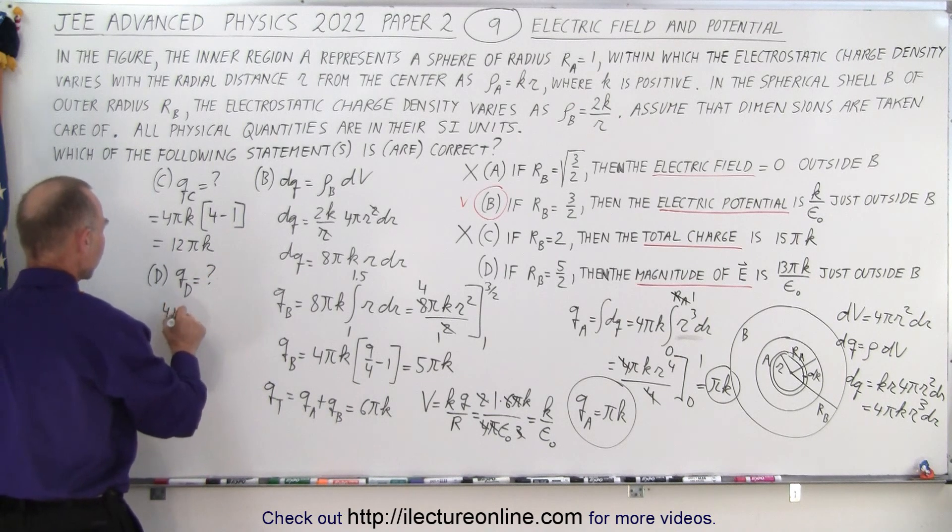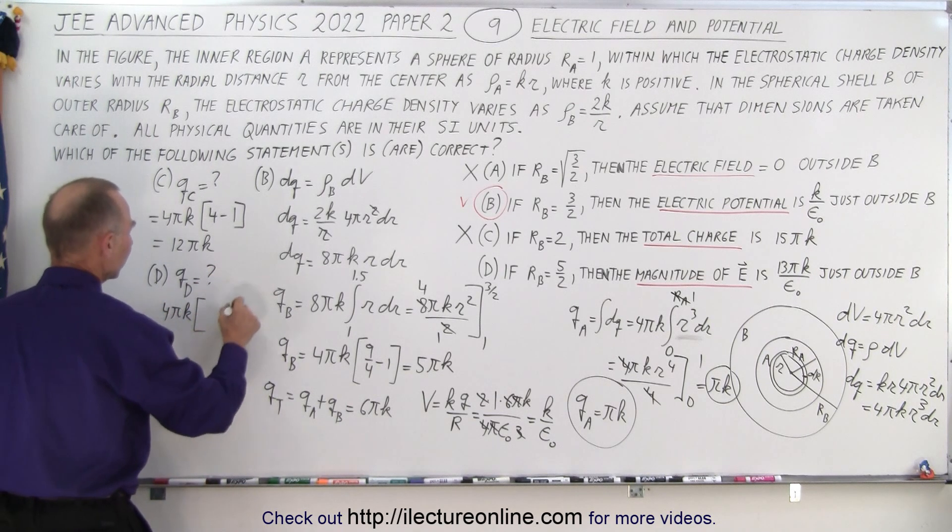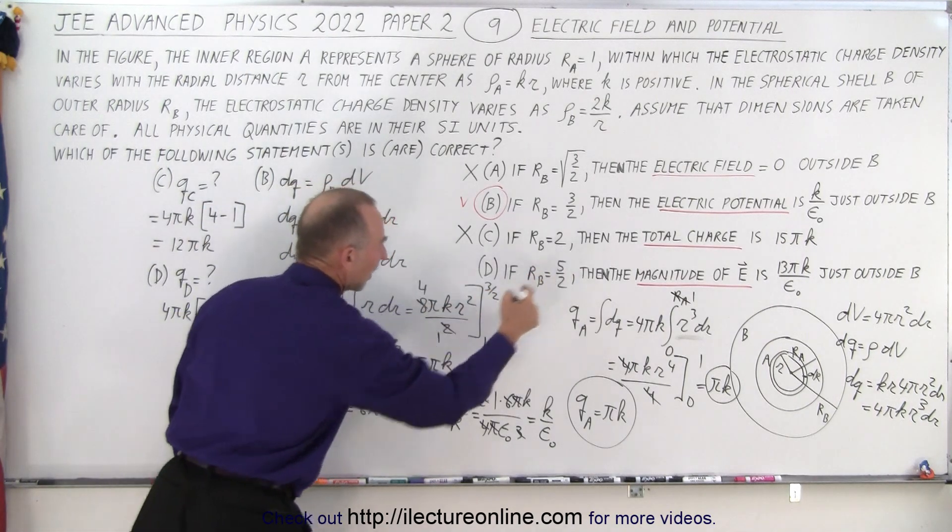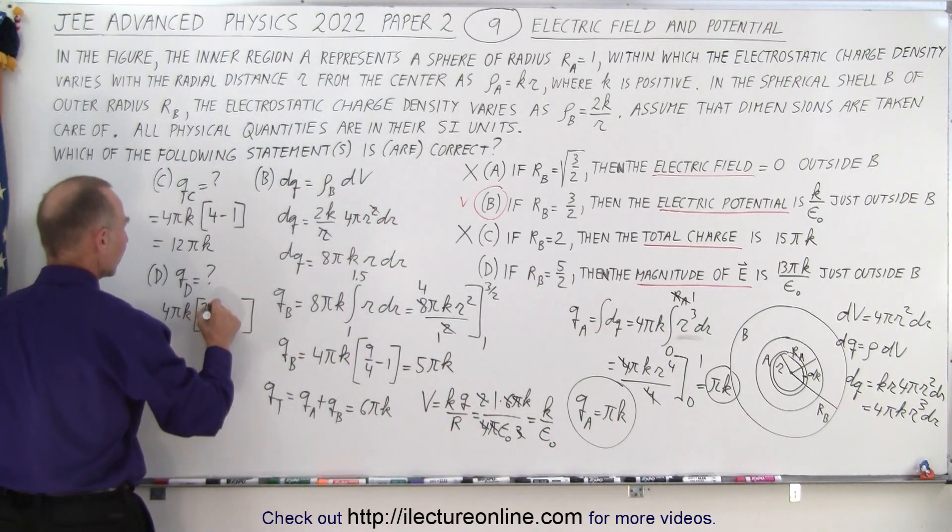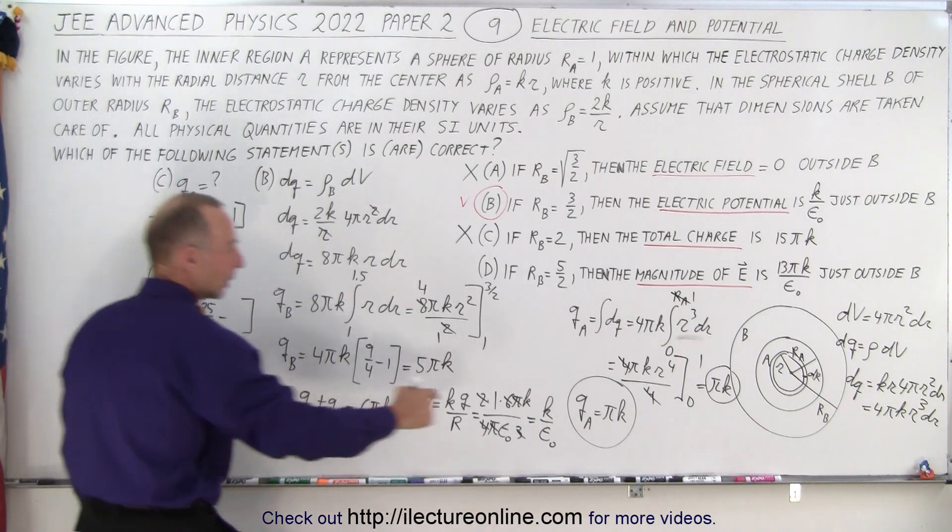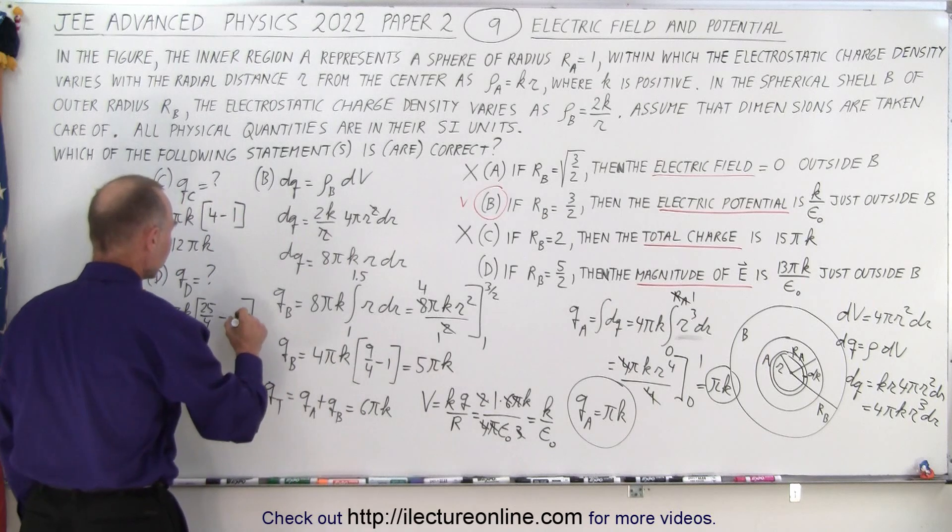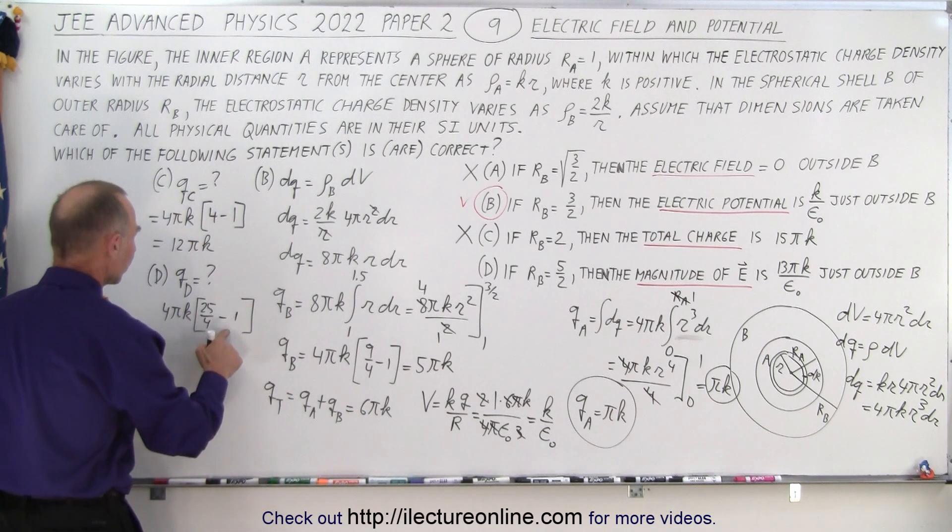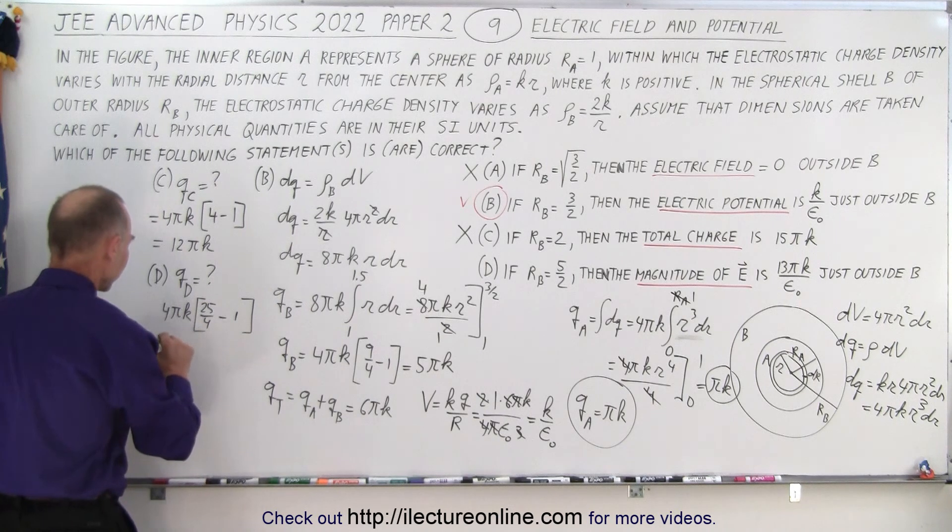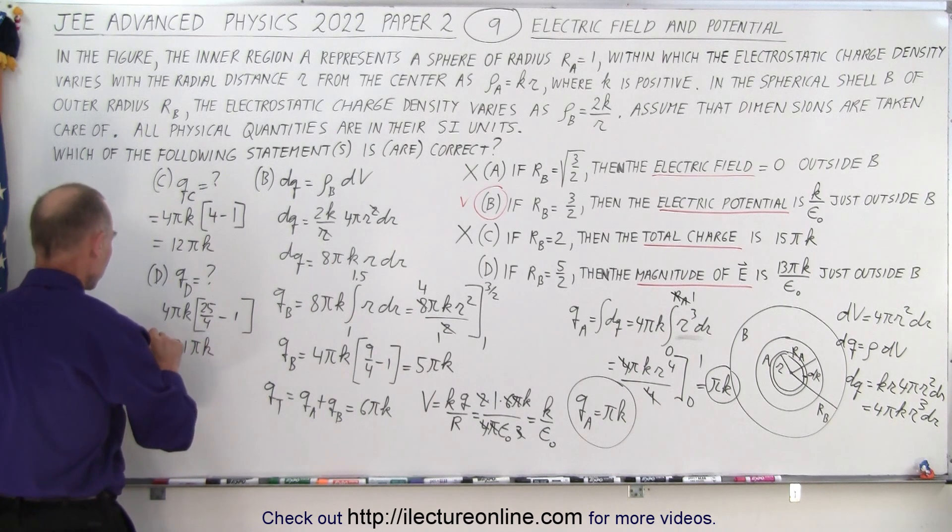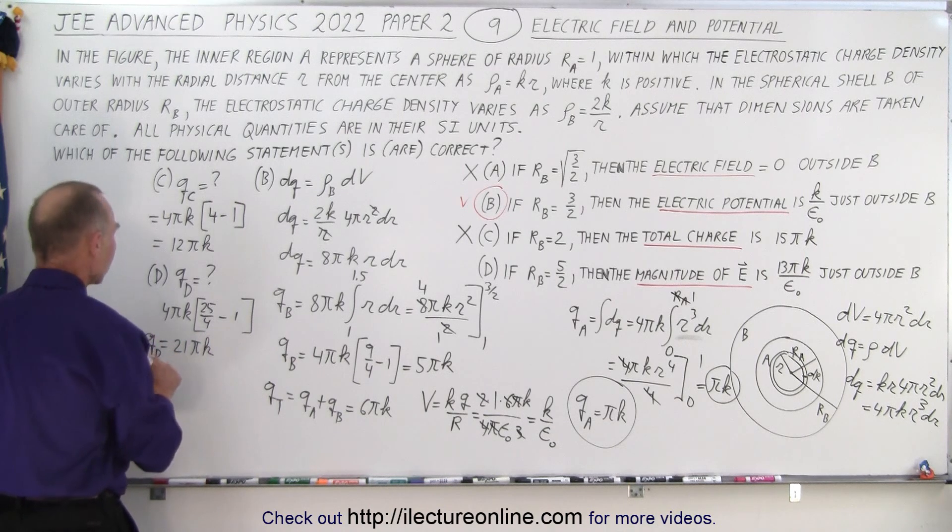That would be equal to 4 pi k times r squared evaluated at the upper limit, which is 5 over 2, which is 25 over 4, minus the inner radius, which is the radius of A, which is 1. That would be 4 over 4, which is 21 over 4. The 4s cancel out, so this is equal to 21 pi k.